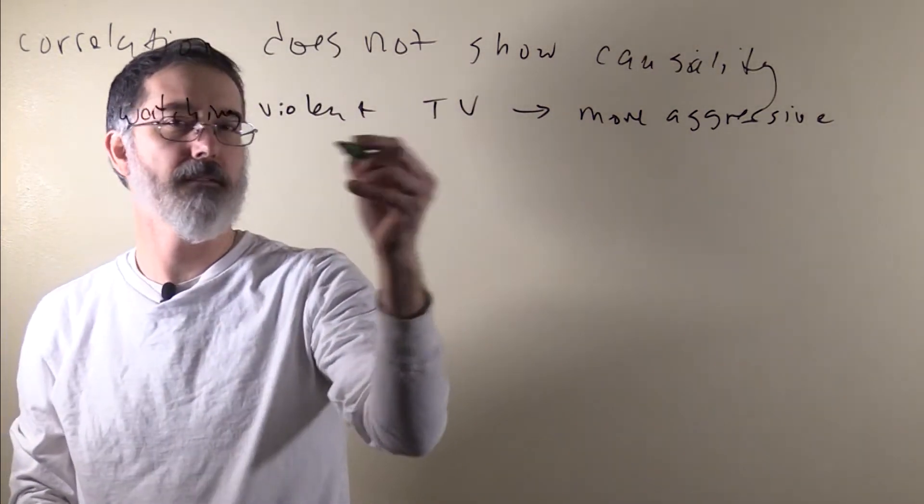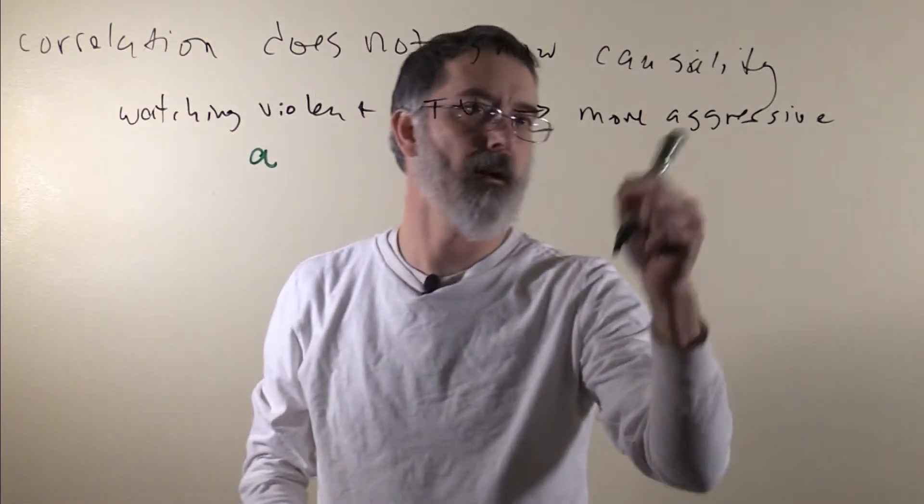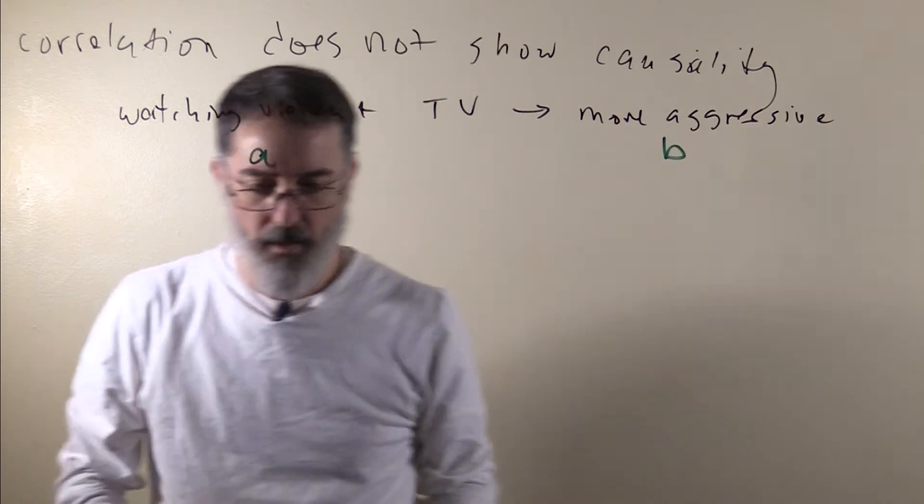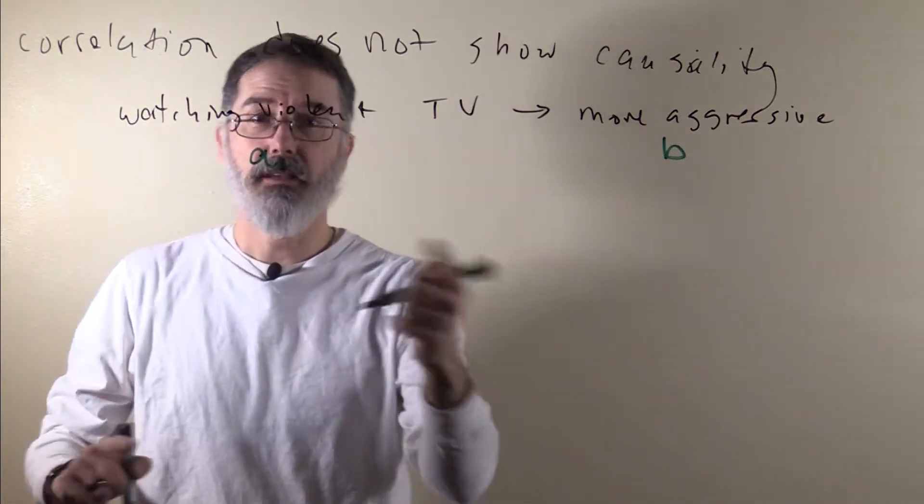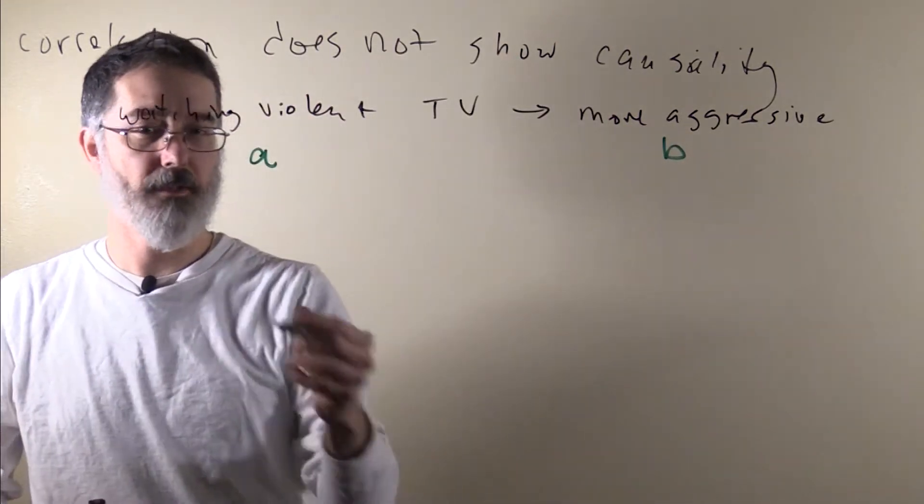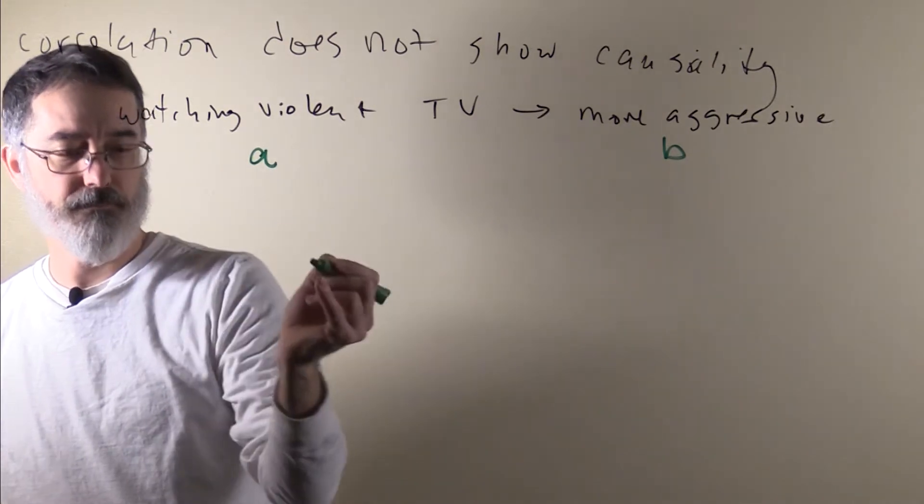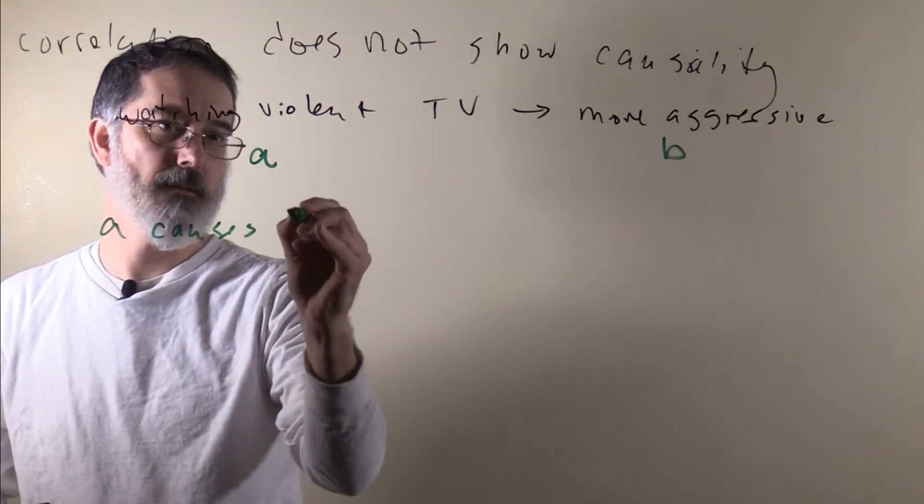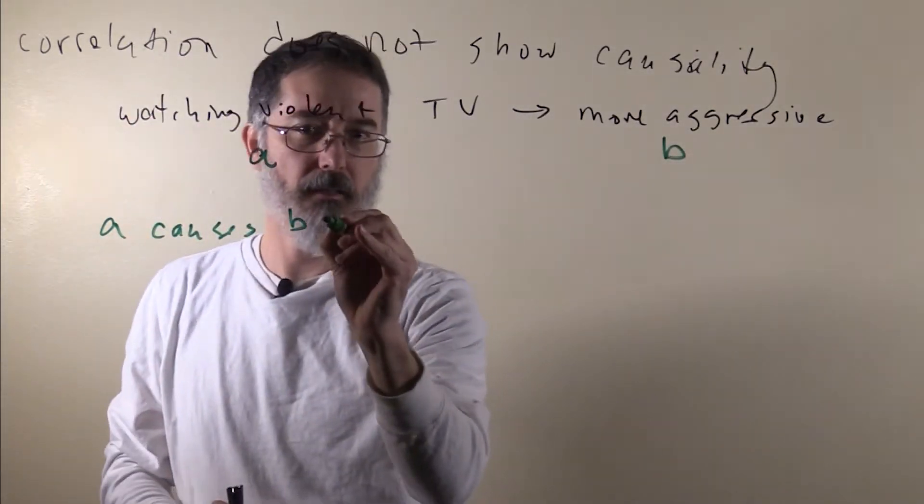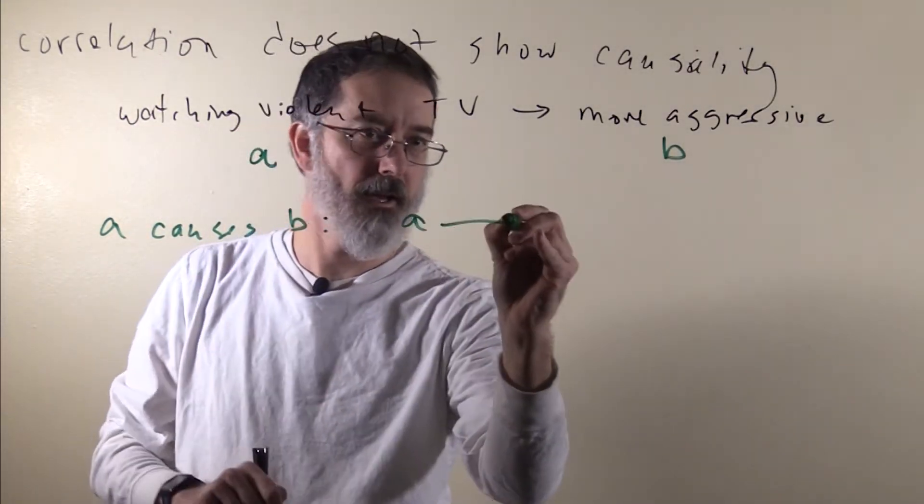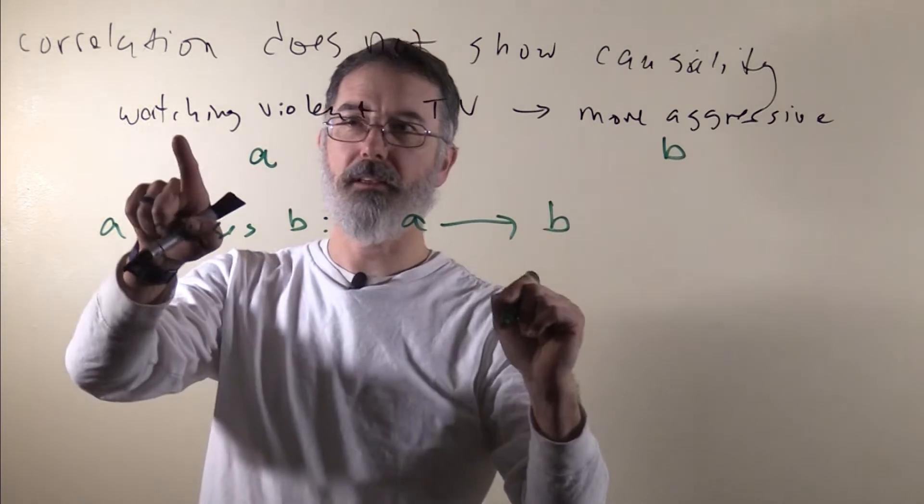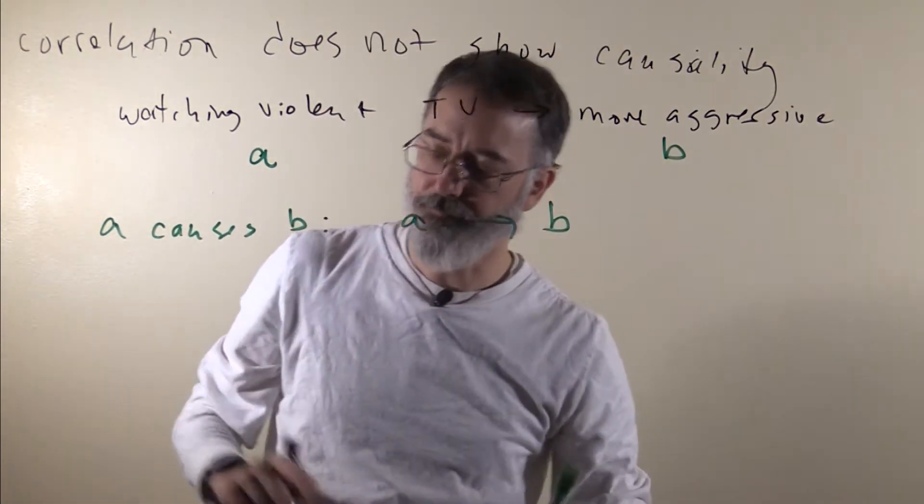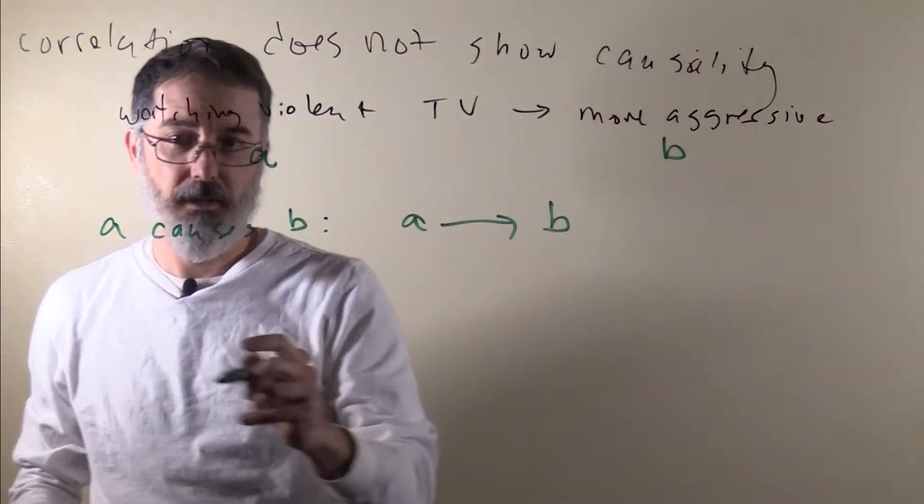Let us call watching violent TV variable A, kids being more aggressive variable B. So it could be the case, given this observed correlation, that A causes B. It could be that variable A is causing an effect in variable B. That is, watching violent TV is causing an effect in how aggressive these kids are. That is possible, but given this correlation, it is also possible that B causes A.